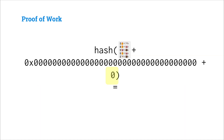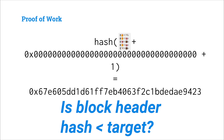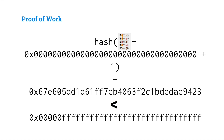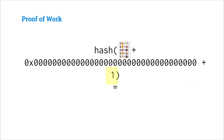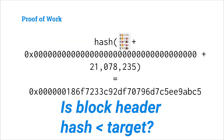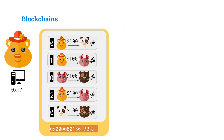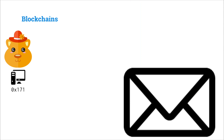Alice's mining software increments the nonce to 1, recomputes the hash and gets 67E6. Still not less than the target. She keeps incrementing the nonce and computing hashes until eventually — with a nonce of 21,078,235 — she gets a hash that is finally less than the target. Now that Alice has solved this hash puzzle, she takes her block with all her transactions, adds this valid block hash, and includes the winning nonce in a packet.